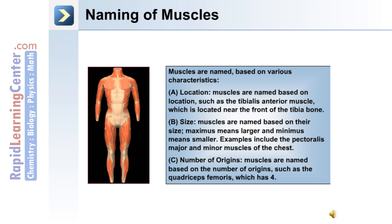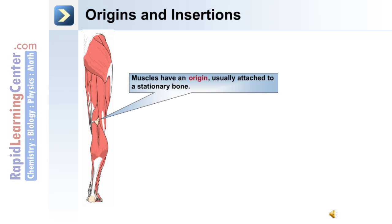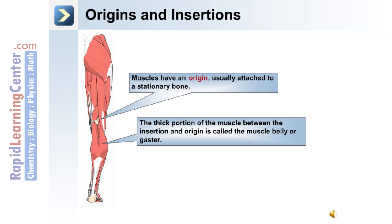Also, the number of origins the muscles have — for example, the quadriceps femoris has four origins. Muscles have an origin which is usually attached to a stationary bone. The thick portion of the muscle, which in this case is a calf muscle, is between the insertion point and the origin, and it's called the muscle belly or gaster.